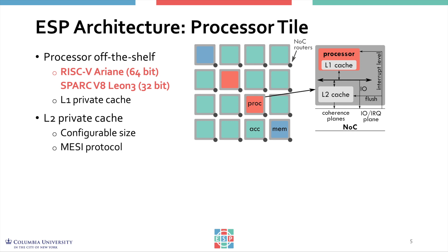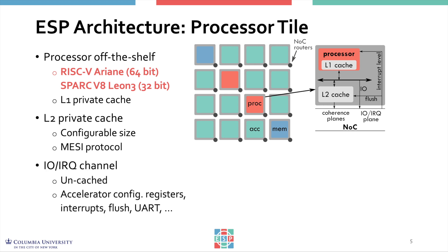A MESI directory-based protocol provides support for system-level coherency on top of dedicated planes in the network-on-chip. Another network-on-chip plane supports IO and IRQ channels, which are used typically for various purposes, but specifically to program accelerators.